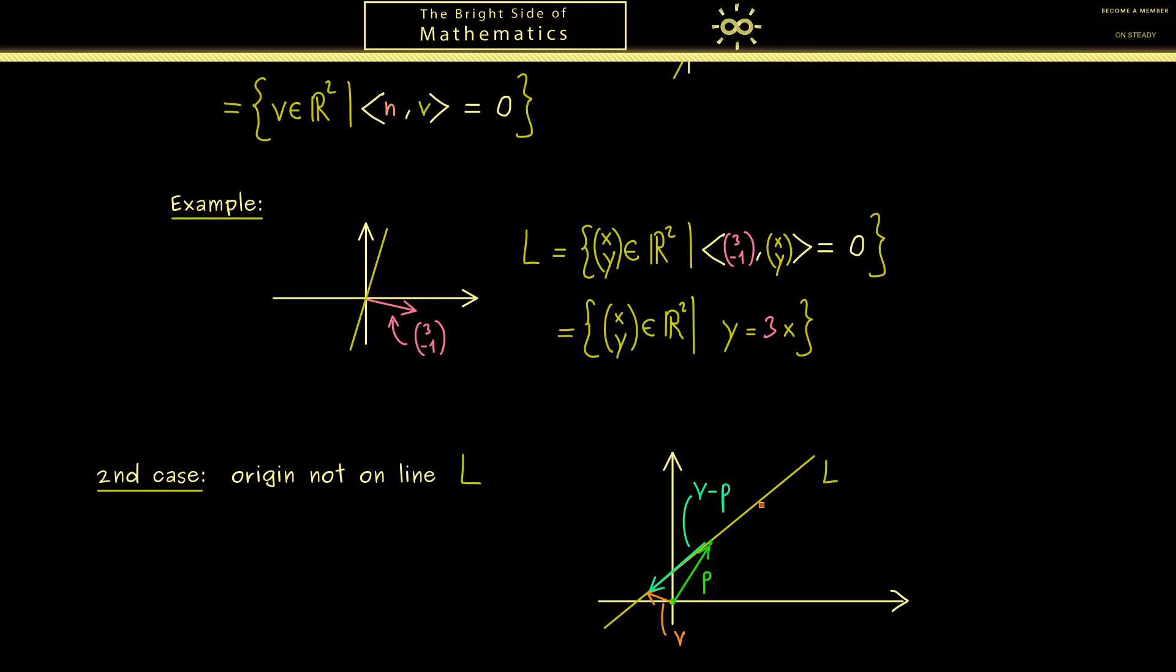And therefore we can do the same thing as before and use a normal vector. Then this vector V minus P is always orthogonal to the normal vector N. Ok, then let's write this down. L is the set of all vectors V in R2 with the property that the inner product of N with V minus P is 0.